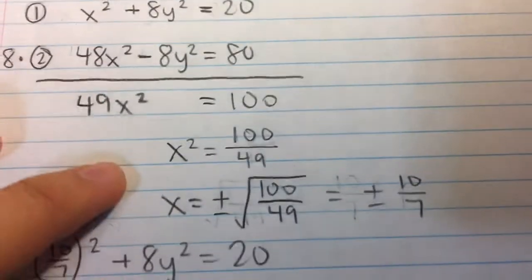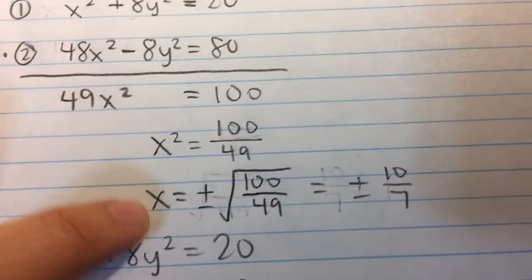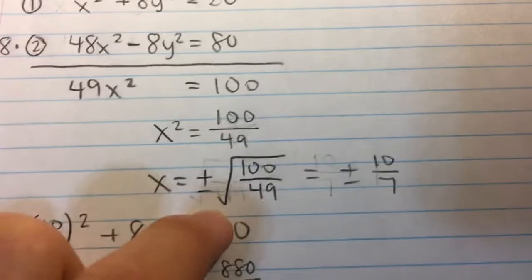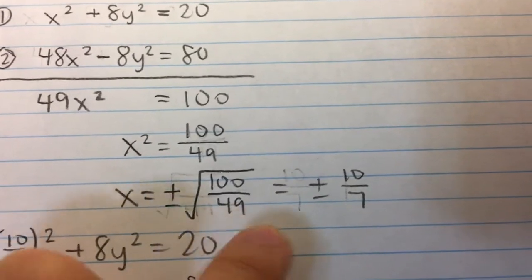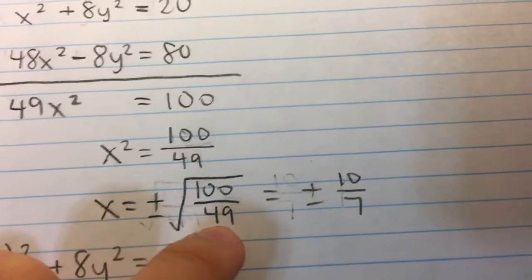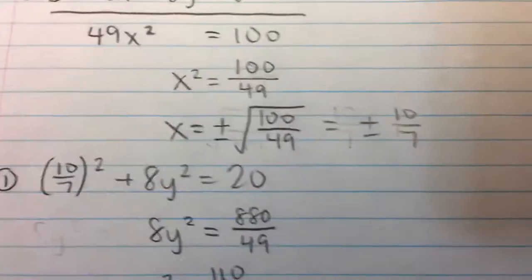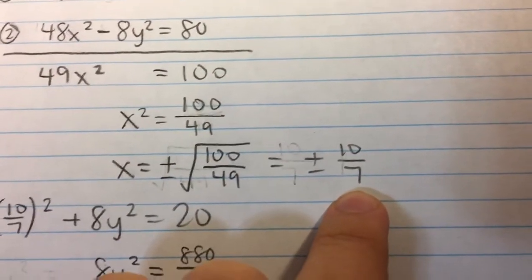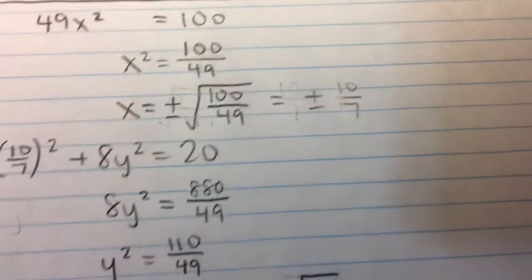I solve for x. I'll divide both sides by 49 and take the square root. On both sides, remember, the plus or minus square root of 100 over 49, which is the square root of 100, 10, over the square root of 49, which is 7. So x can either be positive 10 over 7 or negative 10 over 7.